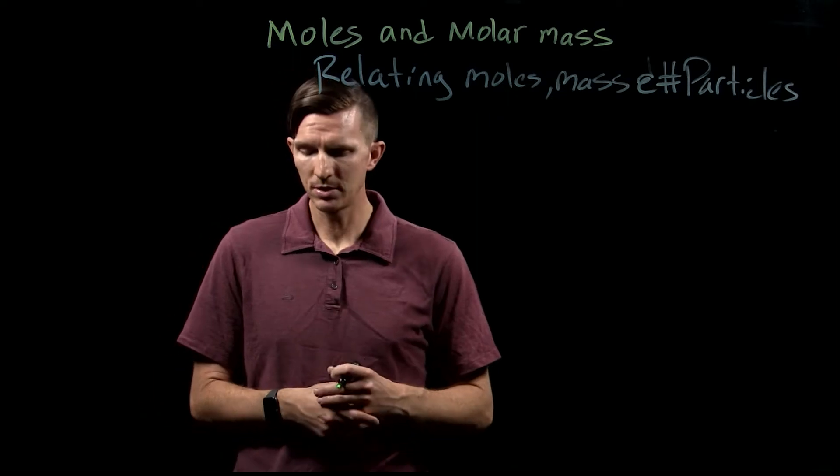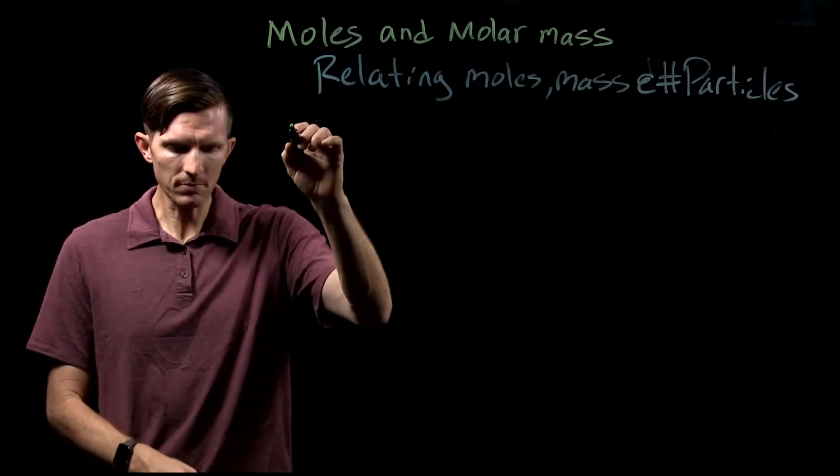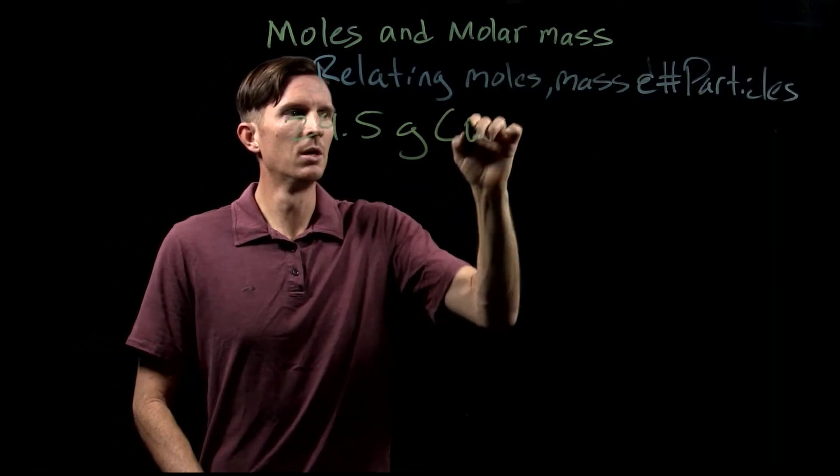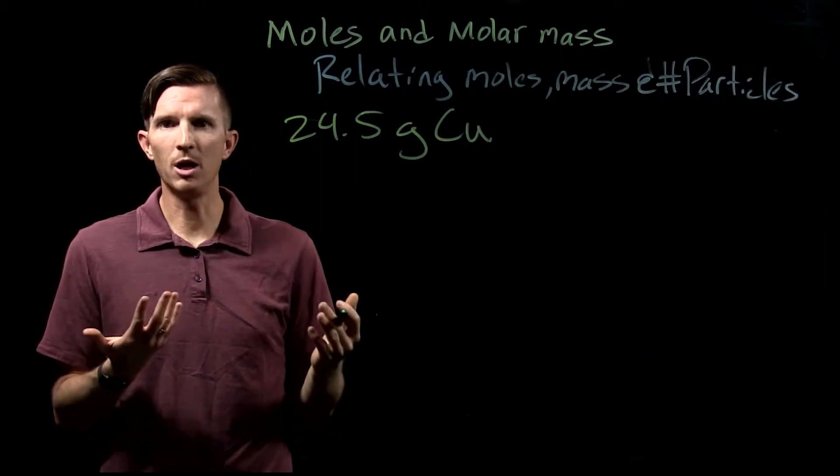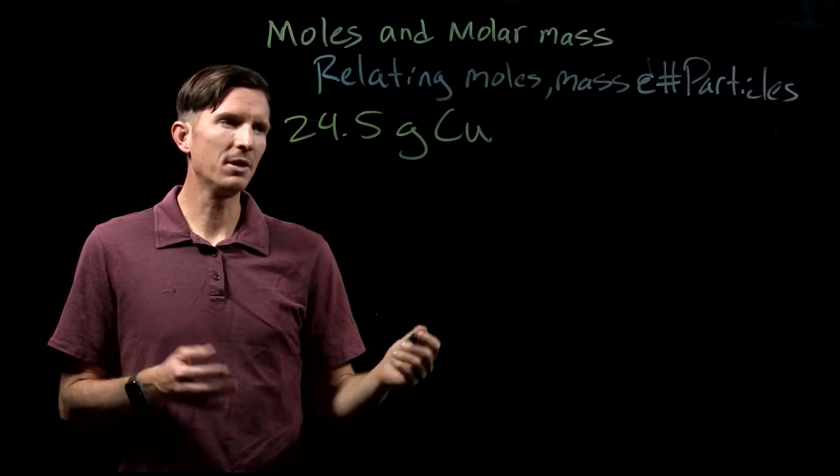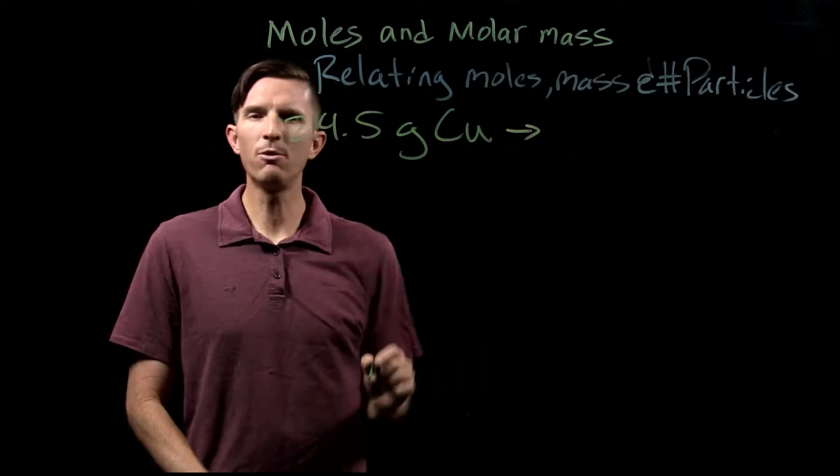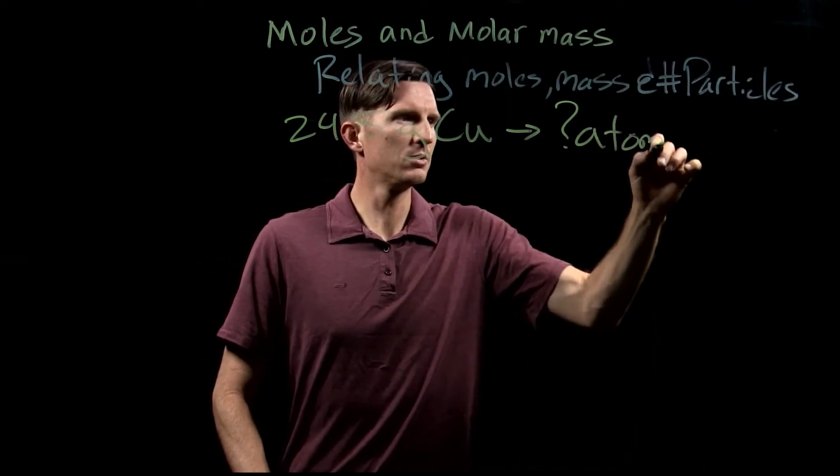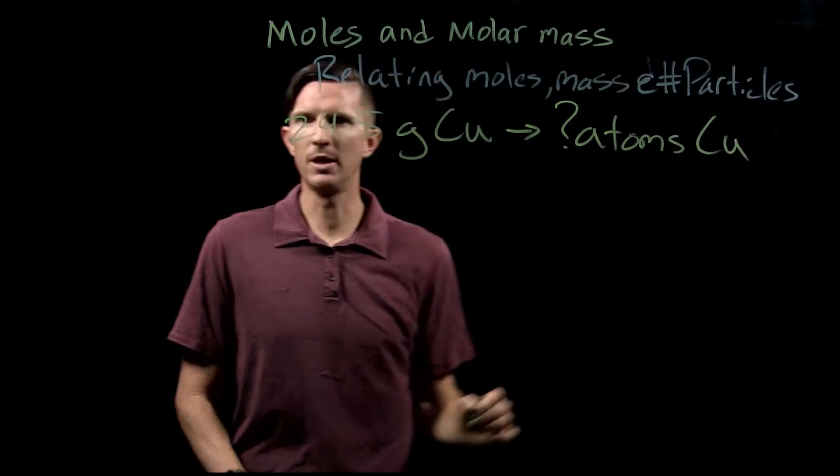To do this we're going to look through an example. Let's say we have 24.5 grams of copper. We have a sample of copper and what we want to do is figure out, well in that 24.5 grams of copper, how many atoms of copper are we going to have?